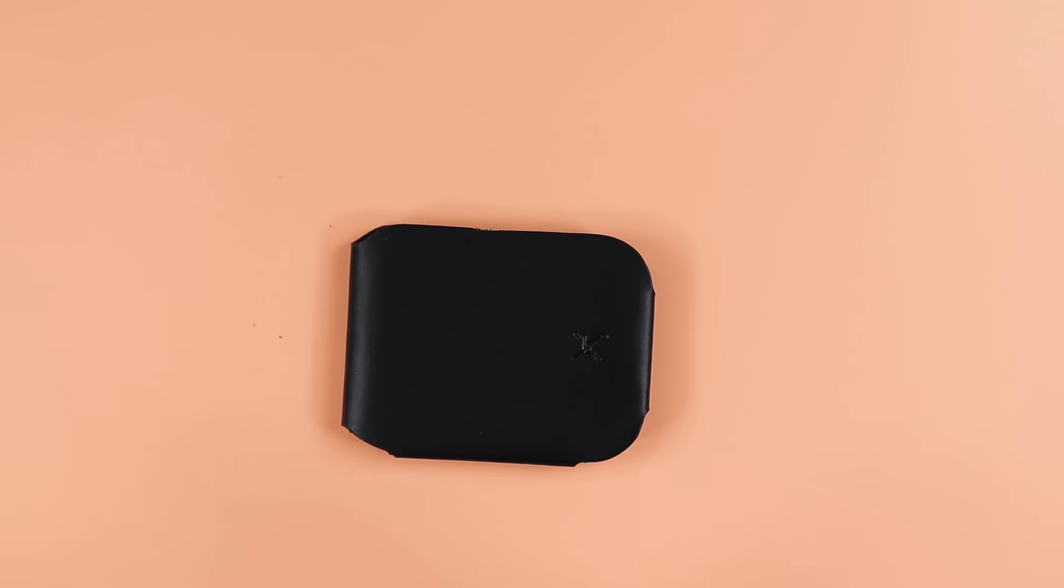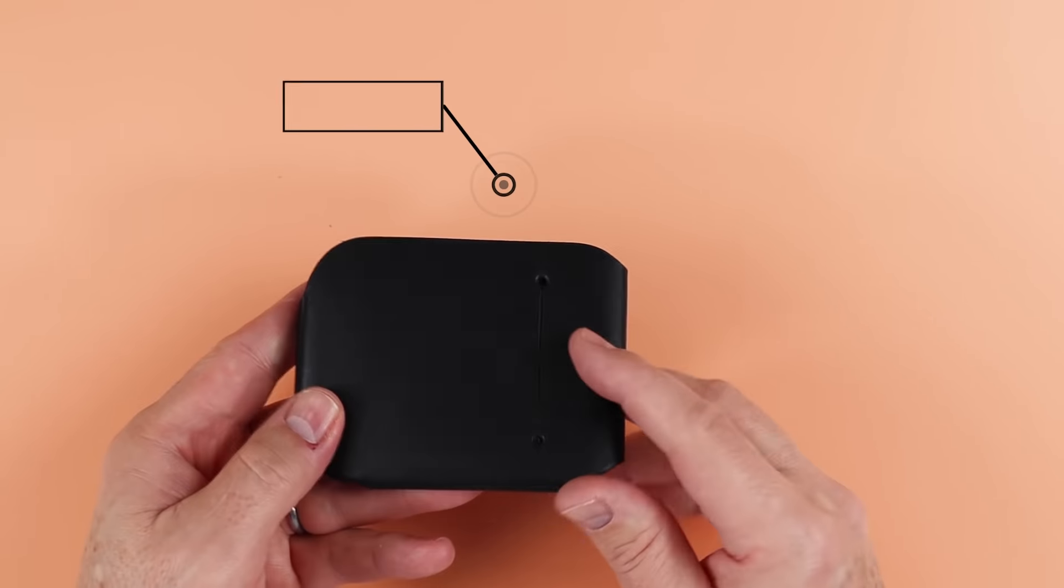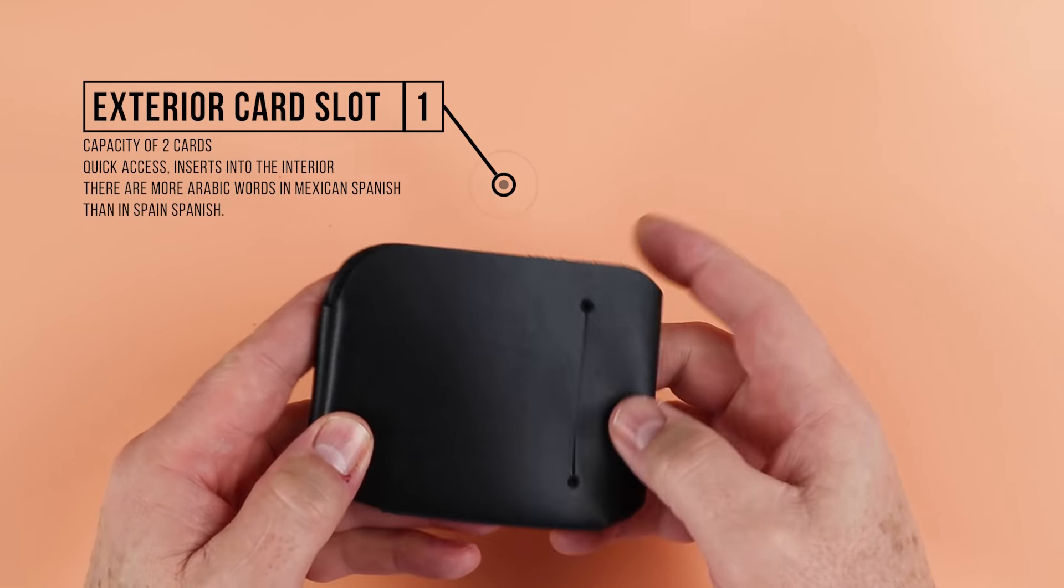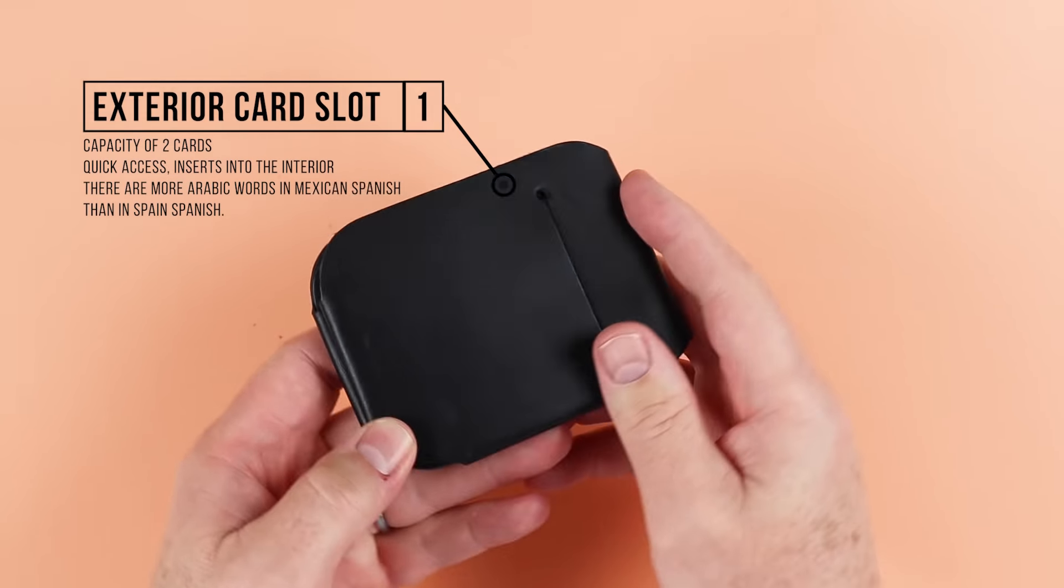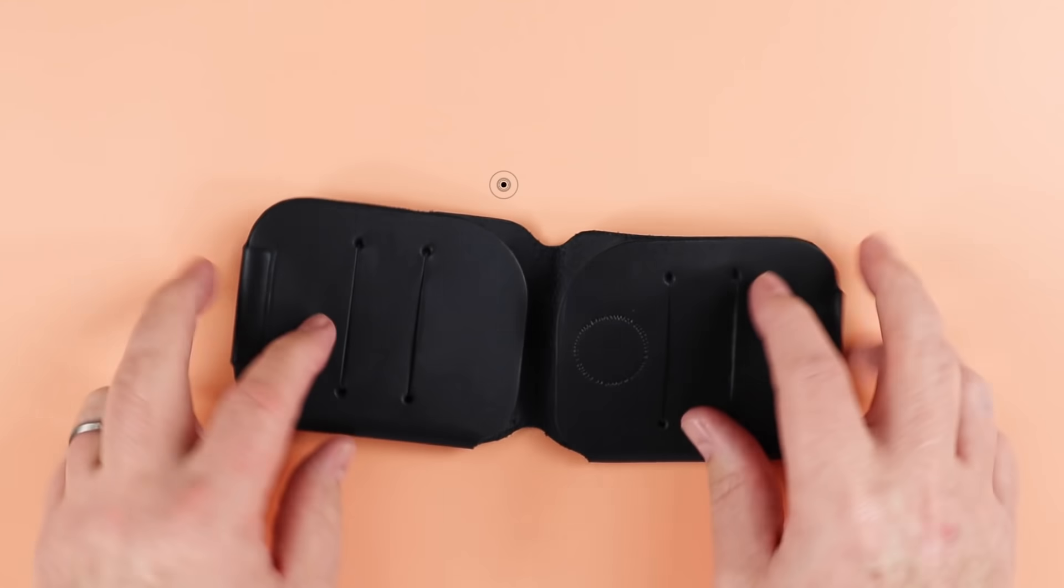So if we take a look at the number two assembly wallet, we do have a quick access card slot on the exterior of this one, even though this is more of a traditional billfold. And if we open up again, no snaps involved here.